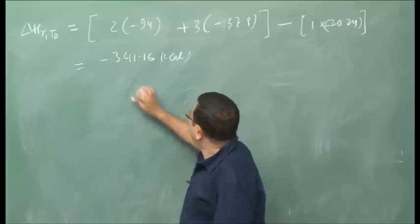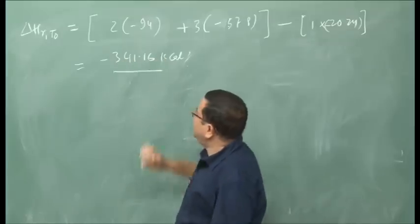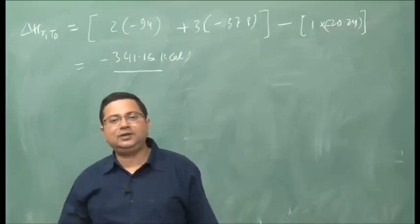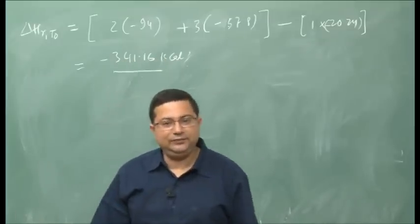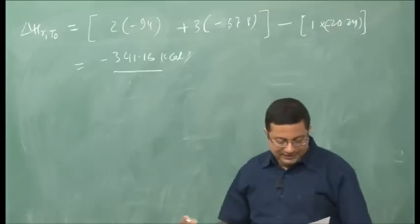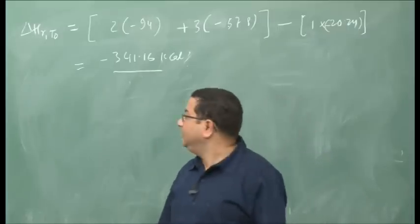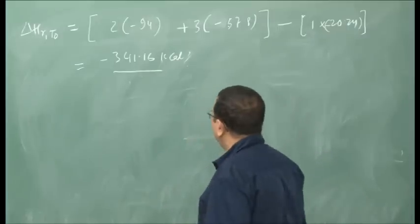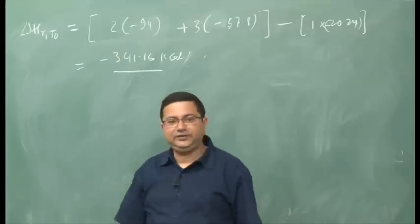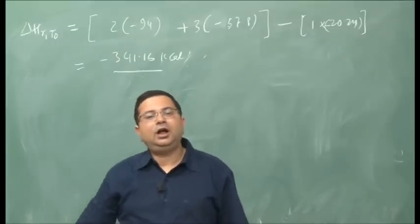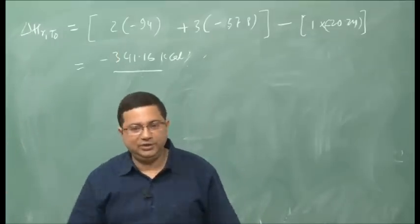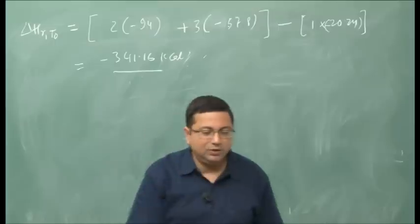This is the heat of reaction at standard state. Notice that this value is negative, which means the reaction is exothermic. This explains how we estimate the heat of reaction. If it were at a different temperature, we would include the C_p terms.